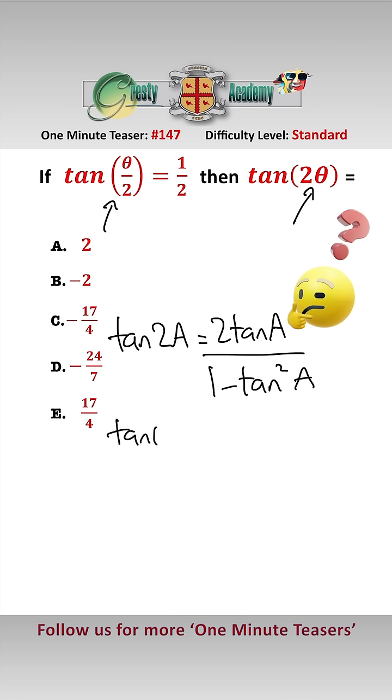First of all, tan theta, using the formula, will be equal to 2 times tan theta over 2, which is a half, over 1 minus a half squared. That equals 1 over 1 minus a quarter, which equals 4 over 3. So we know what tan theta is.